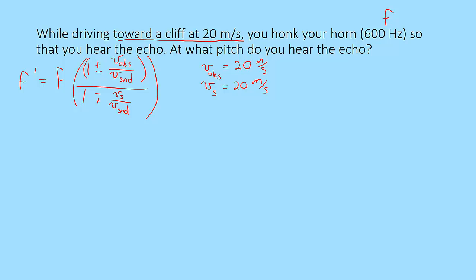The only thing you need to figure out is are you using pluses and minuses or minuses and pluses? You are driving towards the cliff so you as the observer are driving towards the echo which is coming back at you. Similarly the car is moving towards the cliff so the source is moving towards the cliff as well. So we are going to use the top arithmetic functions. Plugging in our numbers we get 600 times 1 plus 20 over 343 over 1 minus 20 over 343.